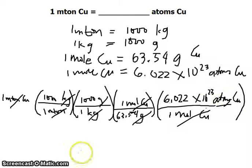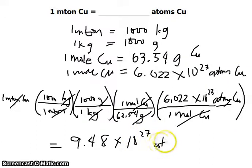be atoms, our unit that we desire. And doing all the math there, we would get a number like this: 9.48 times 10 to the 27th power atoms of copper. And that's our answer.